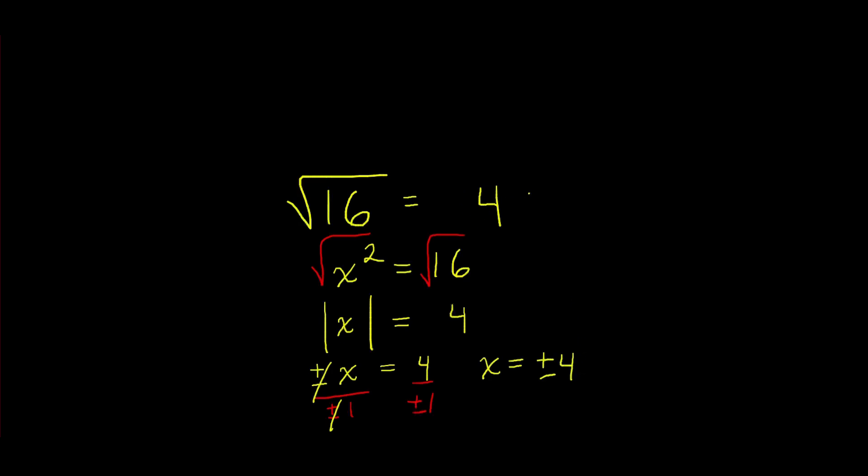So that's how we can get root 16 equal to one answer, four. And yet at the same time, when you're solving an equation like this, x squared equals 16, you get two answers.